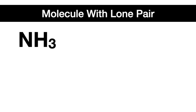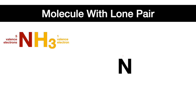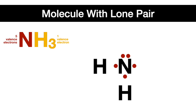Let's do an example with the lone pair on the central atom. In this molecule, there's only one nitrogen and three hydrogens, making nitrogen the central atom. Nitrogen has five valence electrons and each of the hydrogens have one valence electron. So just like before, start by drawing the central atom and then drawing the electrons one by one on each of the four sides of the chemical symbol until they pair up. Then draw the three hydrogens near the single electrons on the nitrogen and each of their one valence electron near nitrogen's single electrons.